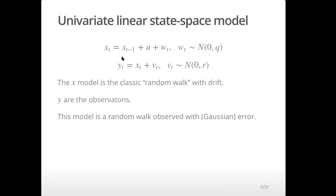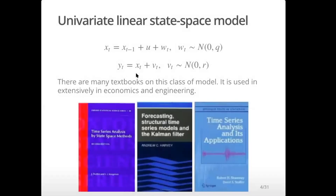Here's our x. It's a function of x at t minus one. There's our u — it's drift — and then we have white noise. That's what's hidden and we are observing that with this observation part. So that looks really simple. That is the simplest version of this state space model formulation.